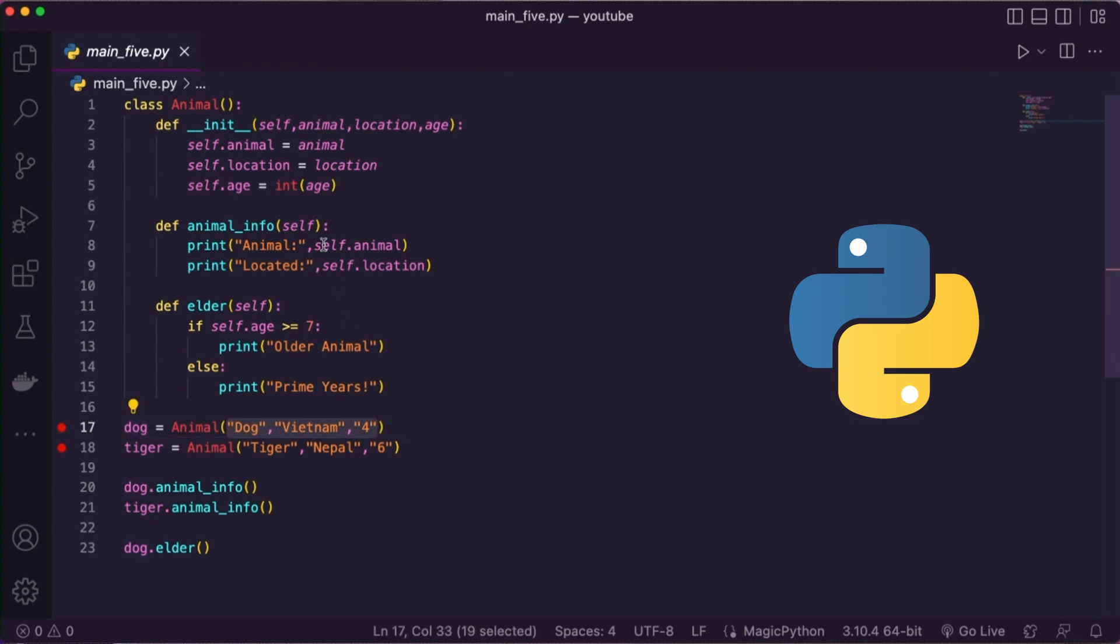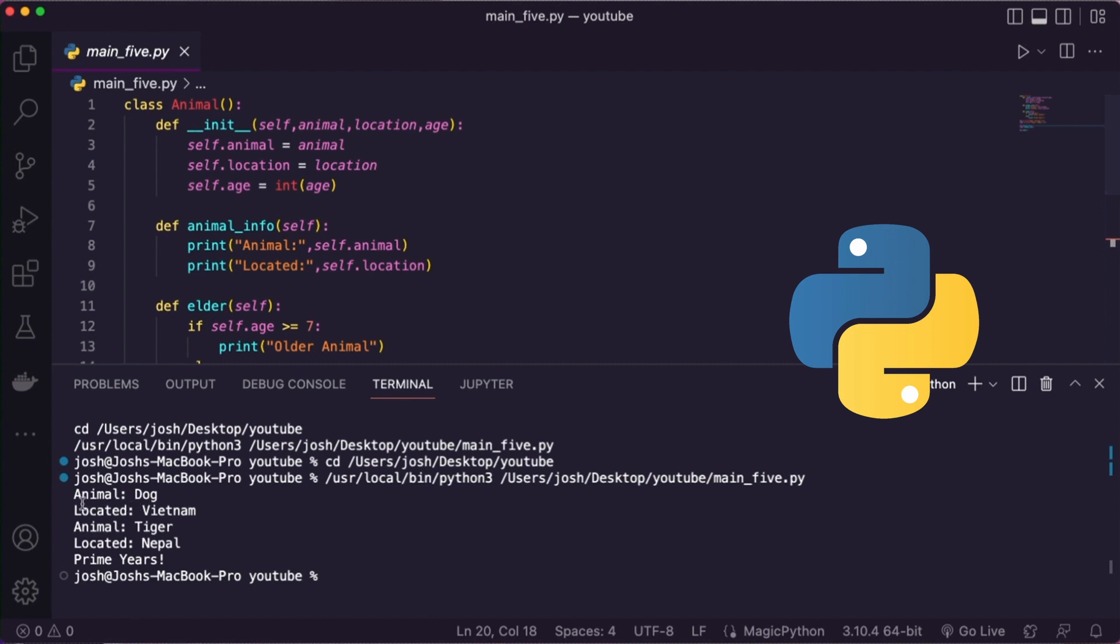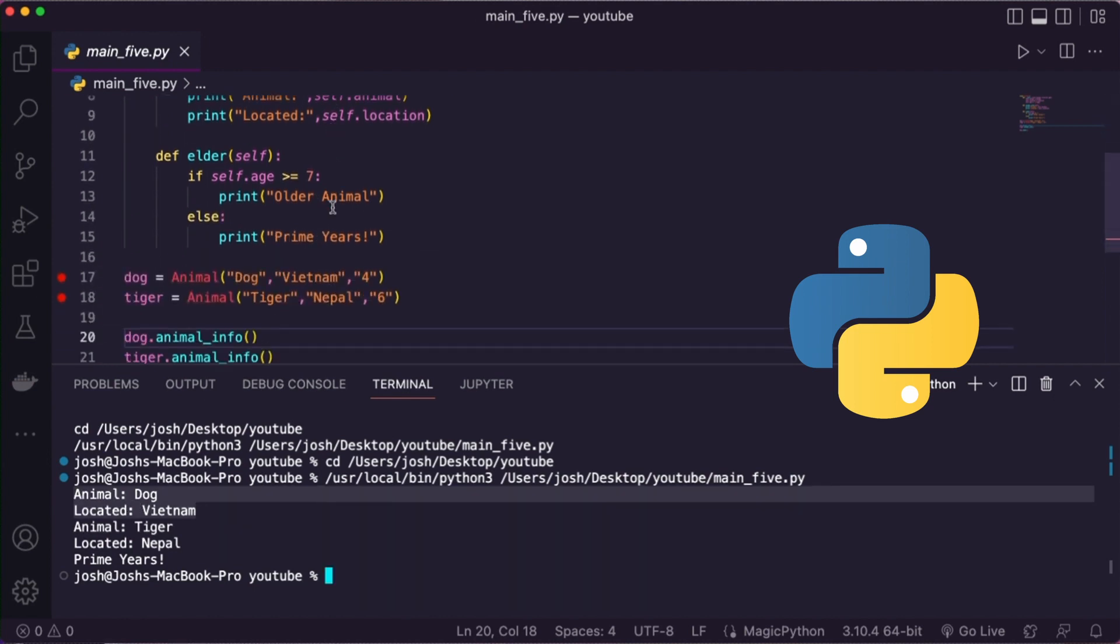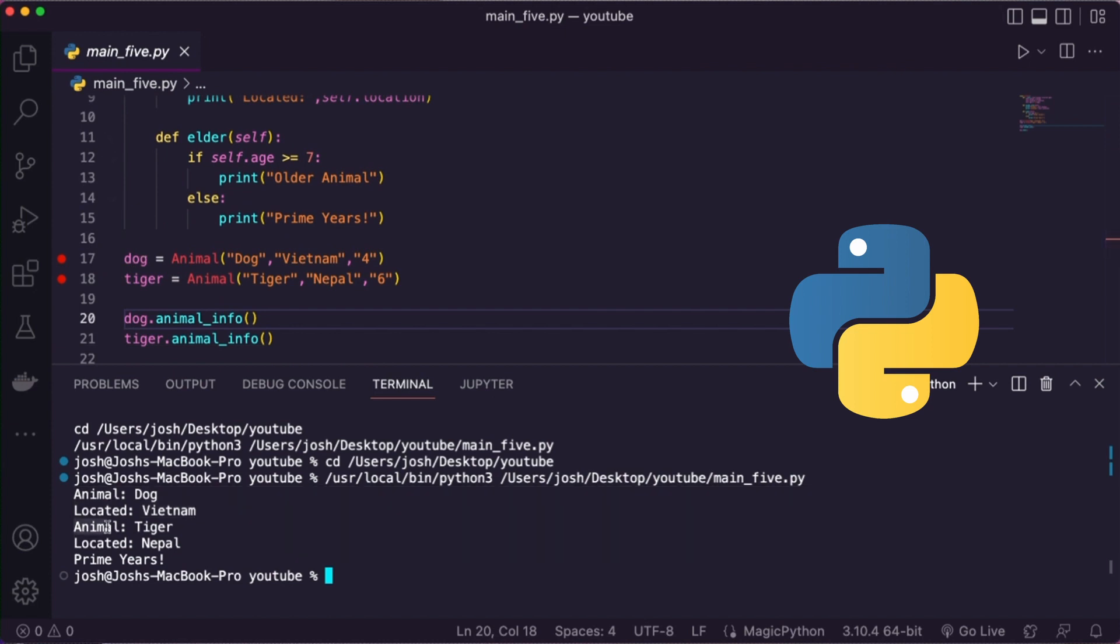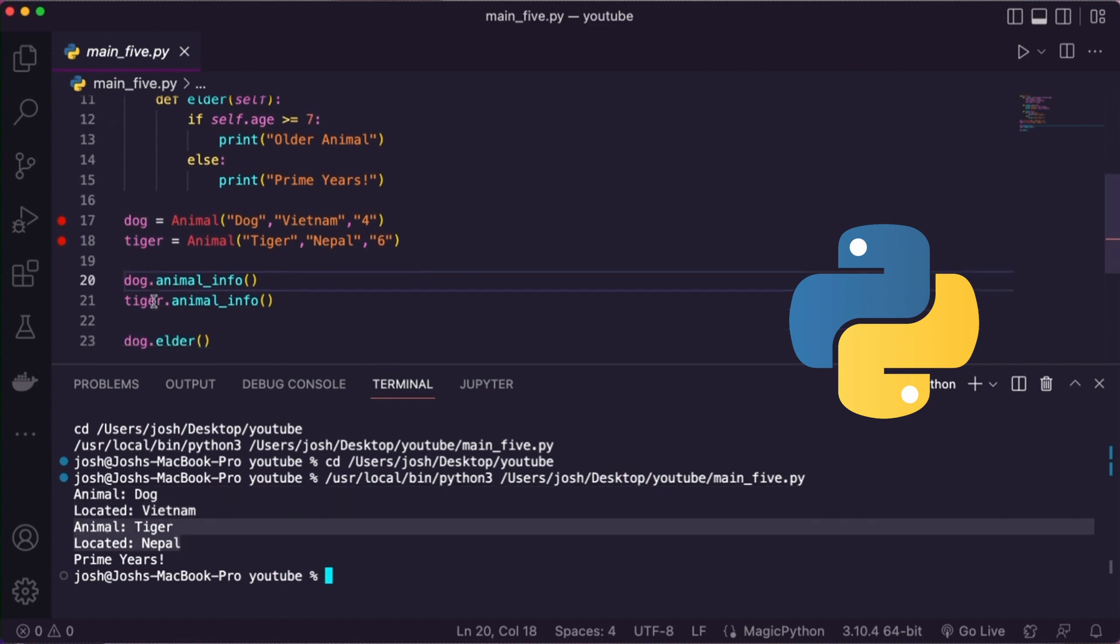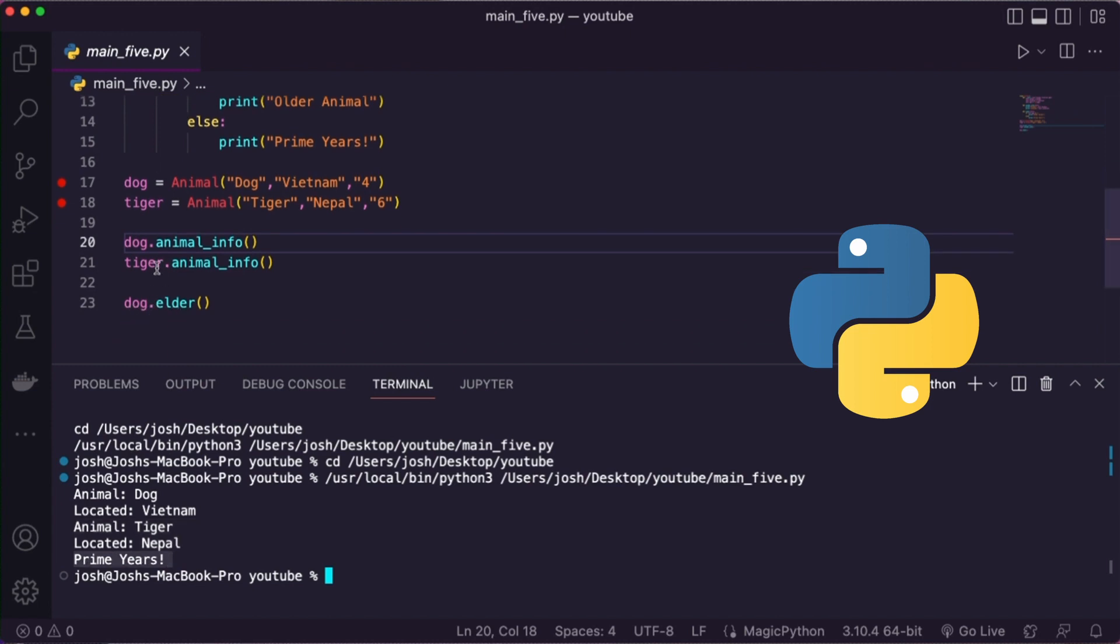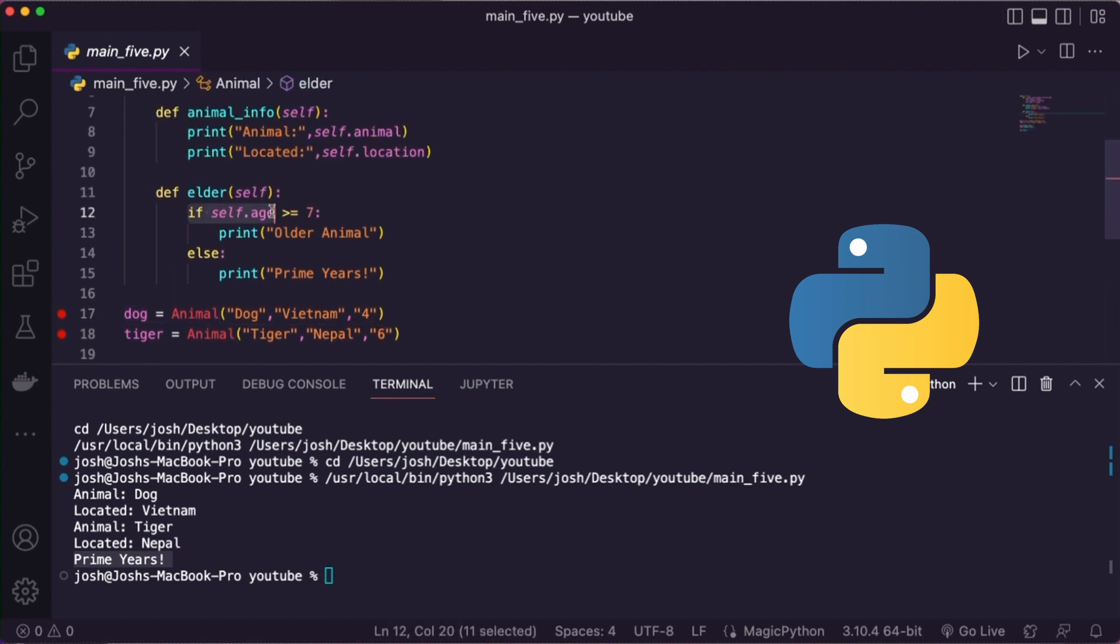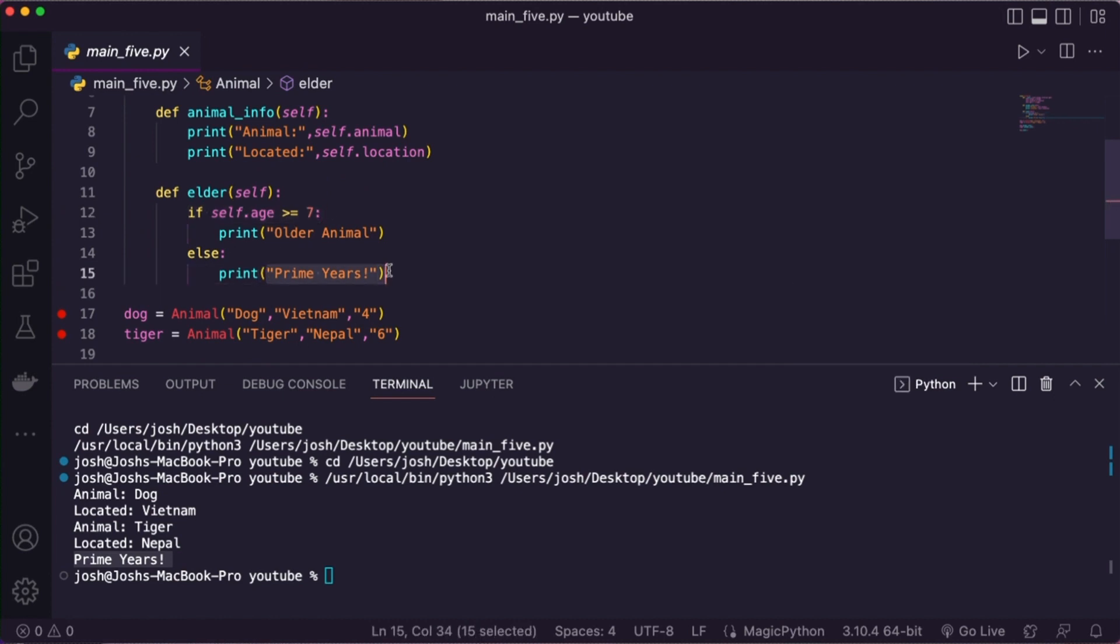I can then create different objects from the same class, giving them the three arguments, the three values that my init function has. In order to use a method, a method must be linked to an object. When I run my code, we're going to see a few things happening here. There you go. Animal Dog Vietnam. That is the first object, dog. And then I have Animal Tiger Nepal. That's the second object. And then I'm doing Dog Elder. It says prime years. Because the dog, their age is four. If my age is greater than seven, it's not. So prime years. That is our concept of object-oriented programming.